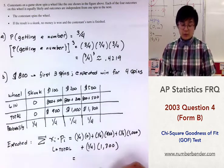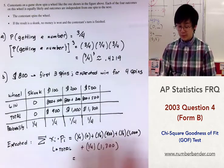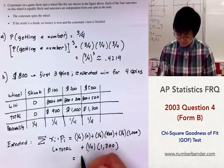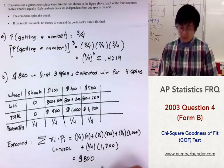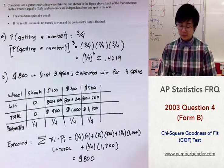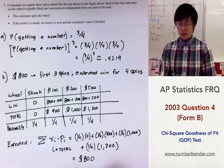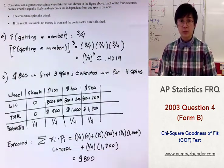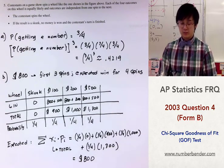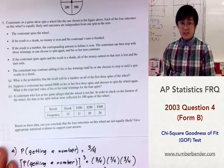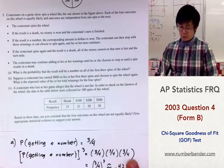Using the calculator to compute the expected value, it equals $800. So the expected win for this condition is still $800, using our probability model and the expected value formula.